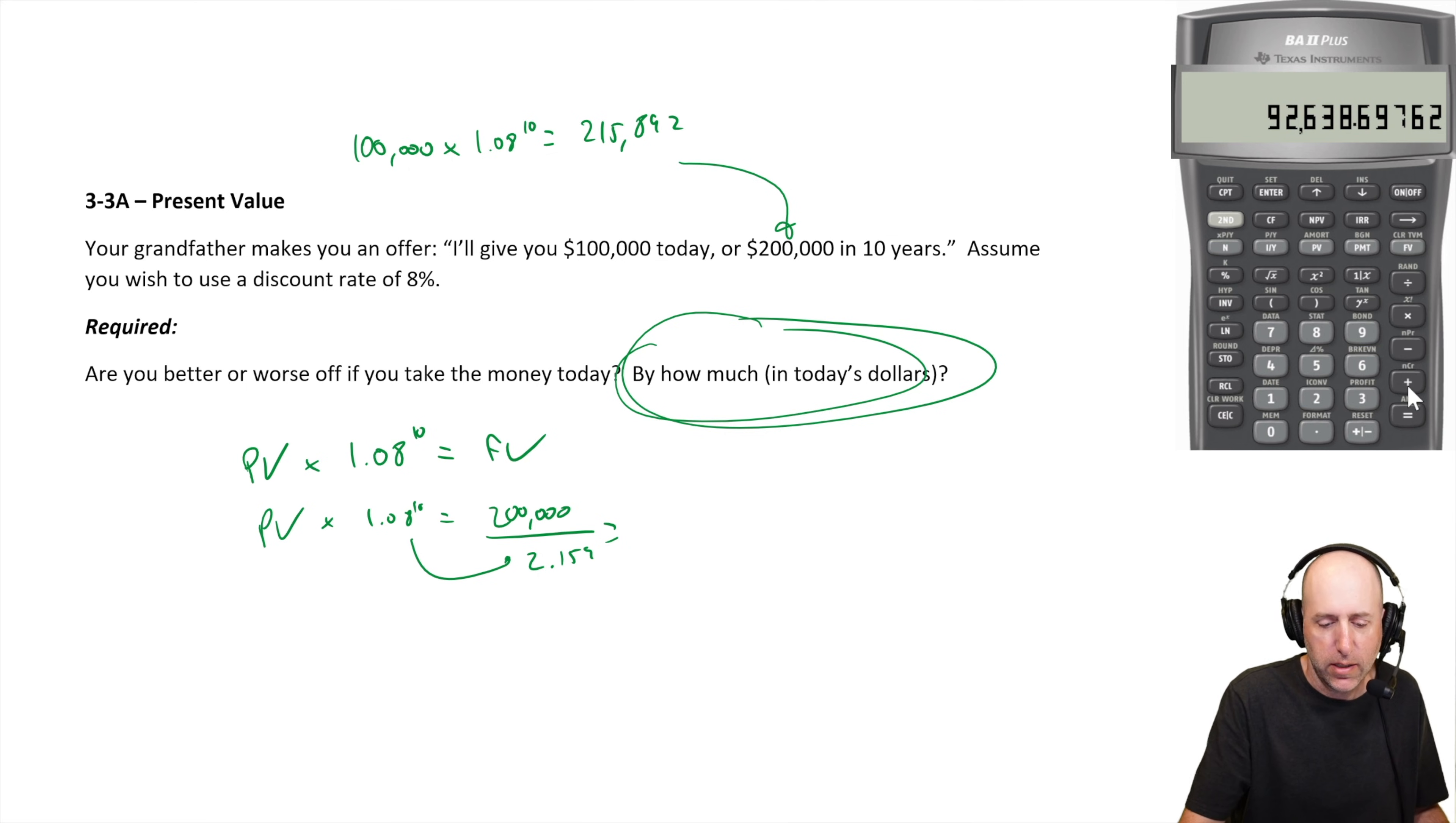That discounts the money to today. I get 92,639. So $200,000 today is worth 92,639.